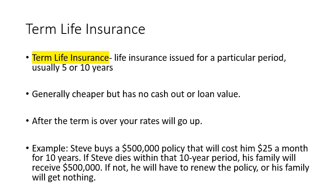After the term is over, your rates are going to go up. So after that five- or ten-year period, if you decide to renew for another term, the amount you pay each month is going to increase. Why? Because you're older. As time goes by, the odds stack against us and we're more likely to pass away, so the insurance company charges more each month to compensate for that additional risk.